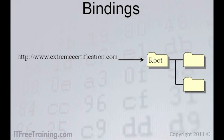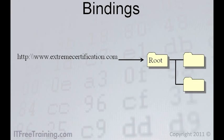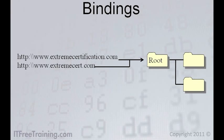Consider this example. If you set your website up as www.extremecertification.com using HTTP, and later it is suggested that people may not like typing such a long domain name, another domain name is purchased: www.extremecert.com. With bindings, you can simply add the new binding for the new domain to the existing website. The new binding will access the same files, saving you from having to configure two websites for the same files.